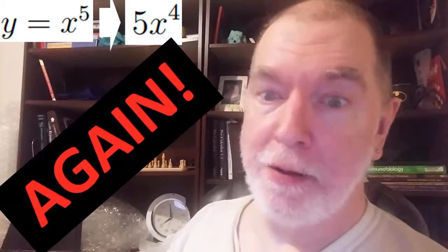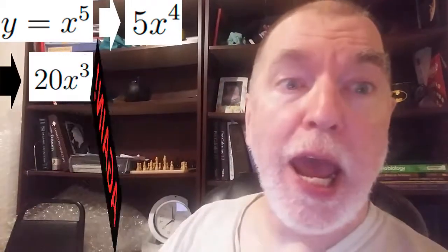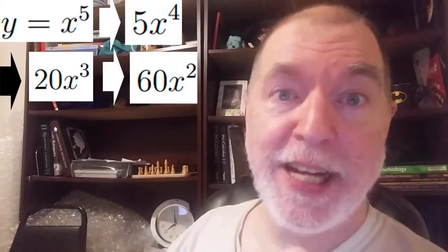We take the derivative and we get 5x to the fourth. Well, that's the first derivative. We've done it once. Do it again! And we end up with 20x cubed. Do it again! And we end up with 60x squared.